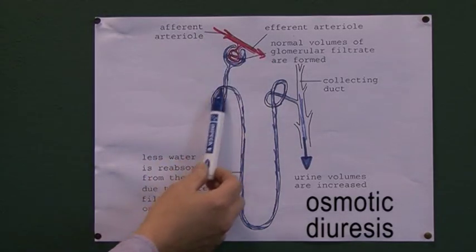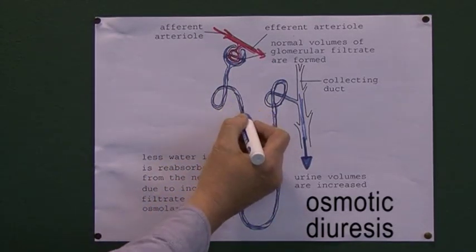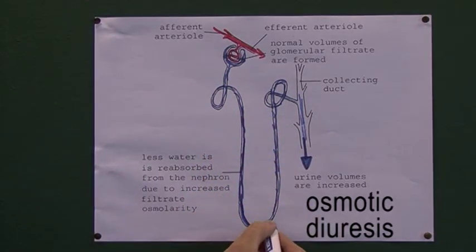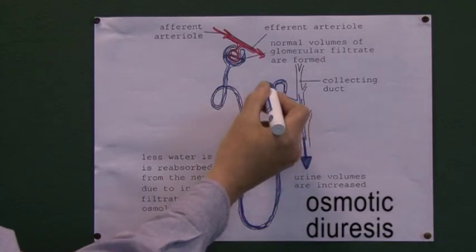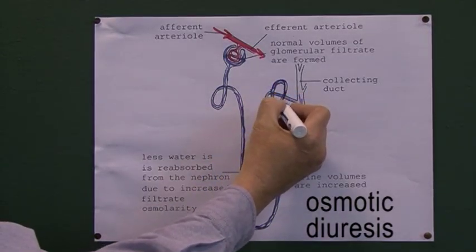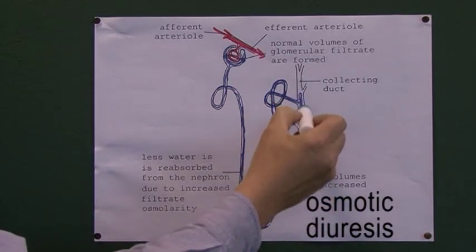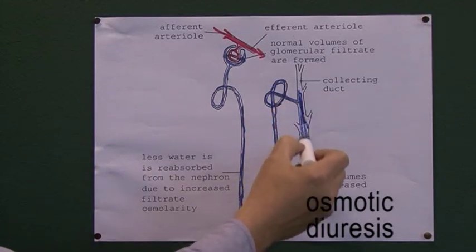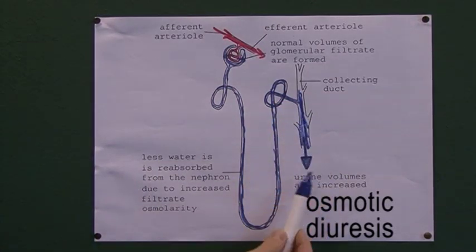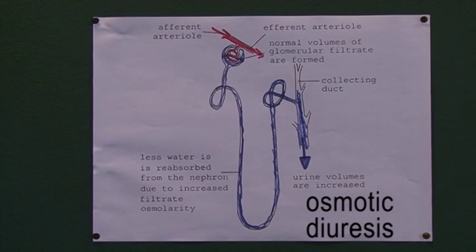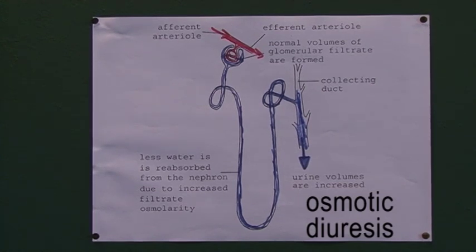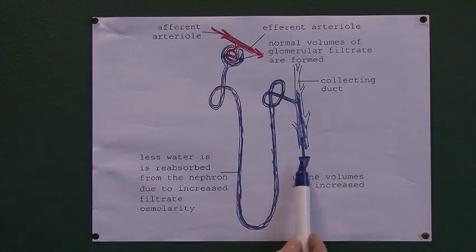We can also use this diagram to explain the osmotic diuresis which causes the polyuria. If the renal threshold is exceeded, glucose is retained in the filtrate all the way along the nephron. Glucose is hyperosmotic — it attracts water to it — therefore as glucose passes into the collecting duct it attracts a lot of water with it, resulting in large volumes of urine. This is a diuresis, occurring for osmotic reasons: an osmotic diuresis. This diagram explains both the glucosuria and the polyuria as a result of an osmotic diuresis.